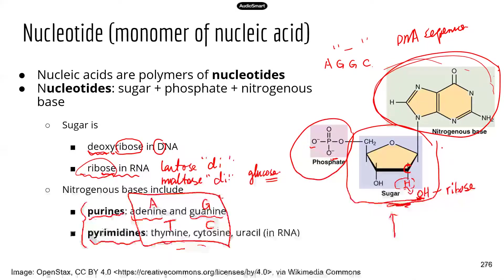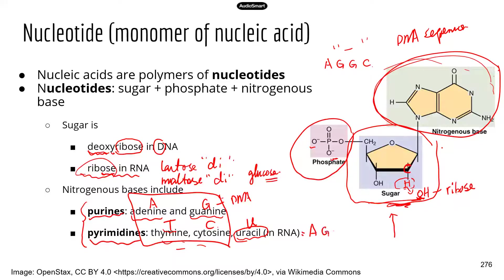In RNA, there are also four different bases, but thymine (T) is replaced by uracil (U). So when you see the letter U, you know you are looking at an RNA sequence. If you see the letter T, that means you're looking at a DNA sequence. In RNA, you have A, G, and C — all the same as DNA — but U instead of T. That's another key difference between DNA and RNA.